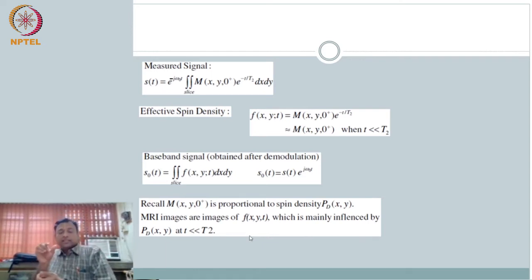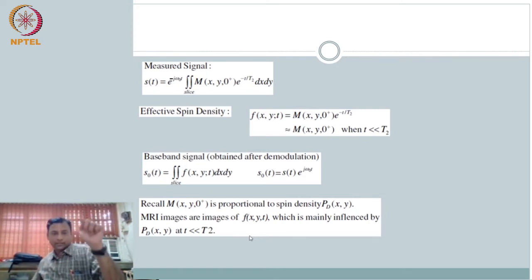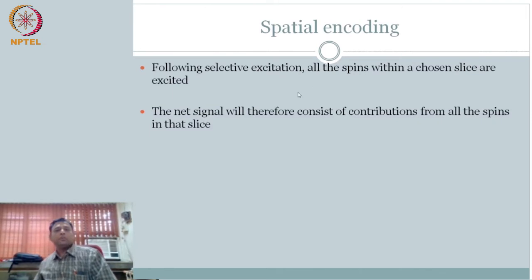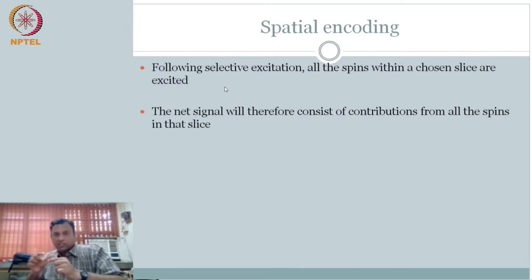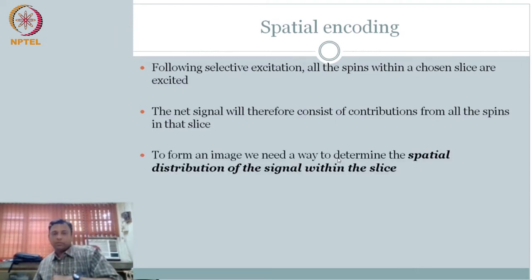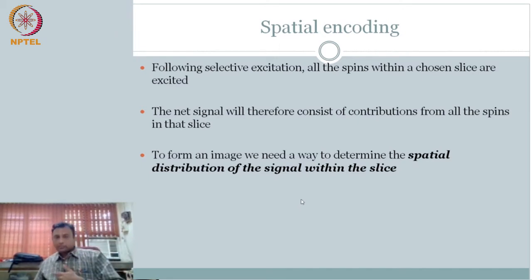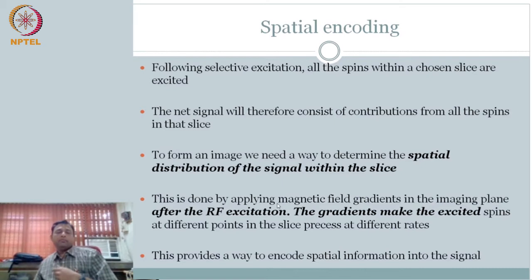The story does not end here. He still says the signal is coming from this volume — I need to know where within this volume it is coming from: that is x, y. For that we do spatial encoding. Following selective excitation, all spins only within the selected slice are excited. So the next signal you get is from all the spins within this volume. Now I have to recognize within this plane where the contribution is coming from.